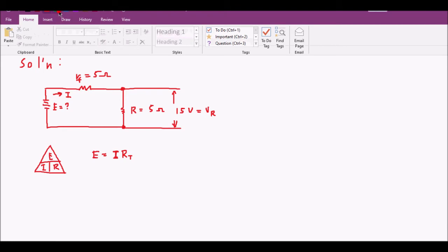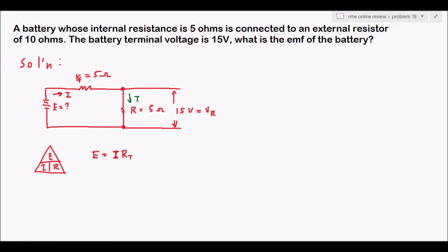We remember that in a series circuit, the current through each resistance is equal to the total current. So the current through the external resistor I_r is the same as the total current I. Using the Ohm's law triangle, I_r equals Vr divided by R.